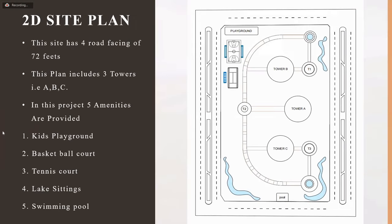This is the site plan of my project. We can see four roads in the plan that are 72 feet wide, and these are the three towers: Tower A, Tower B, and Tower C. In this project we are providing five types of amenities. At the top of the project is the playground, below that is the basketball court, and below that is the tennis court. At the bottom of the plan is the swimming pool, and these three spiral shapes are the artificial lakes provided in this project, along with two fountains.